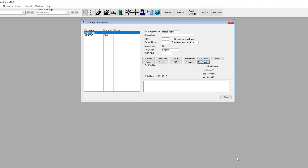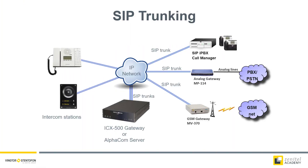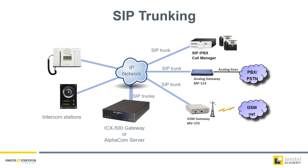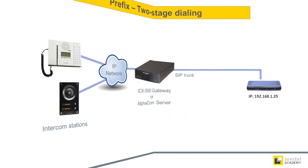Next step is to create a prefix to access the SIP trunk from an intercom user. There are two methods to choose from. Two-stage dialing, also known as overlap dialing, is typically used towards SIP gateways. One-stage dialing, also known as nBlock dialing, is normally used towards PBX or call managers.